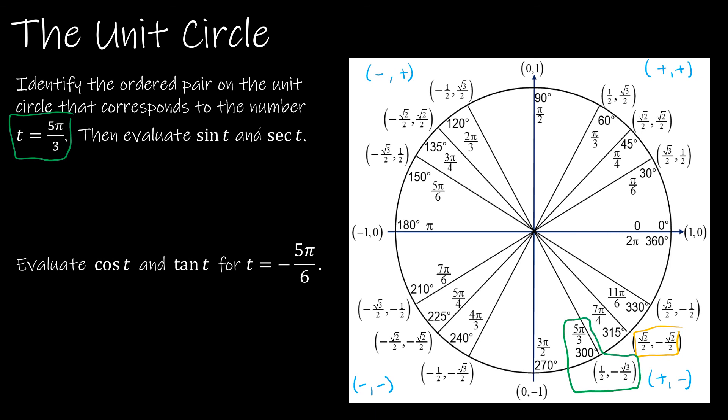So 5π over 3, which is the same as 300 degrees, is (1/2, -√3/2). Now if you'll recall, sine of t is just the same as the y value. And so in this case, sine of t, or sine of 5π over 3, is -√3/2. I didn't have to do any work. I didn't have to break out my calculator.